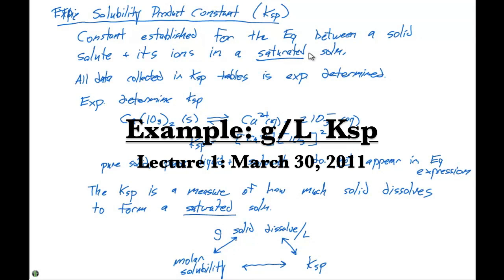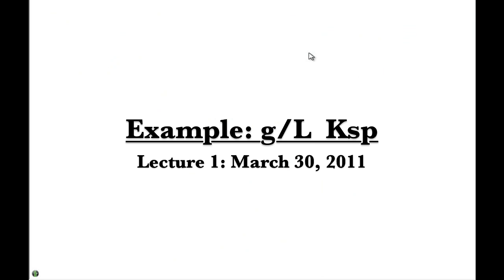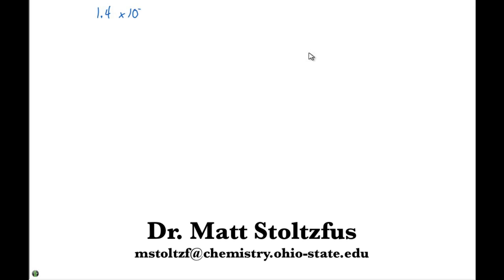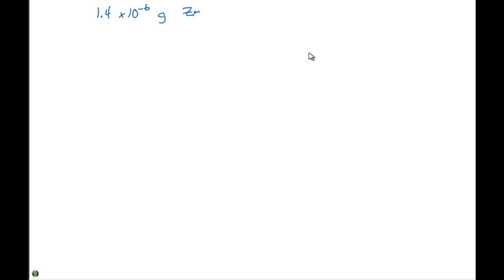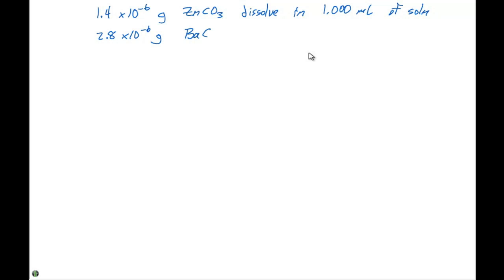Our experiment is going to be this: we're going to have 1.4 times 10 to the minus 6 grams of zinc carbonate, or ZnCO₃, dissolve in 1.000 milliliters of solution. It's also found that 2.8 times 10 to the minus 6 grams of barium chromate, which is BaCrO₄, dissolves in 1.000 milliliters of solution. We're going to assume that these solutions are aqueous. What we want to do here is calculate the Ksp for both.